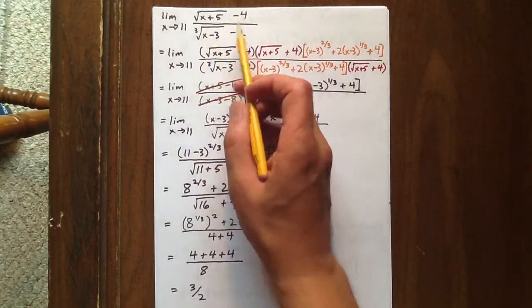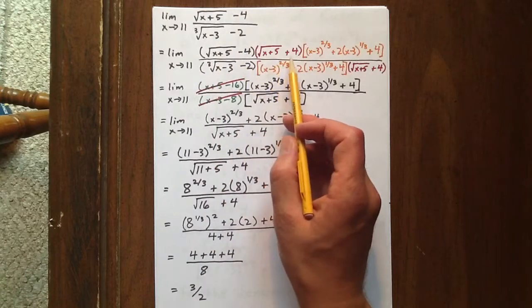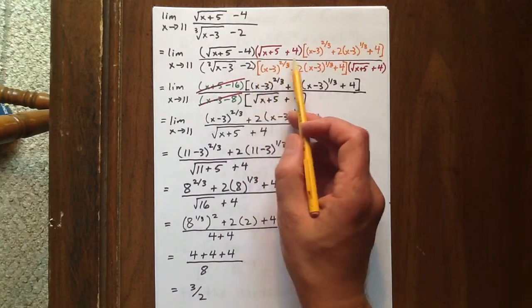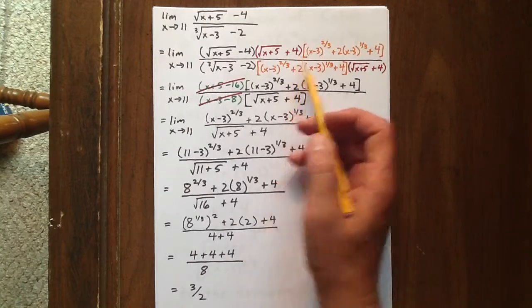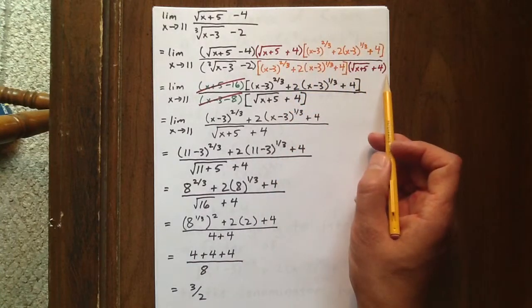Rationalizing the square root is relatively straightforward, and since we introduced this factor to the numerator, we're going to introduce it to the denominator as well.